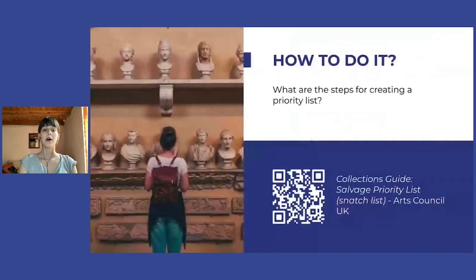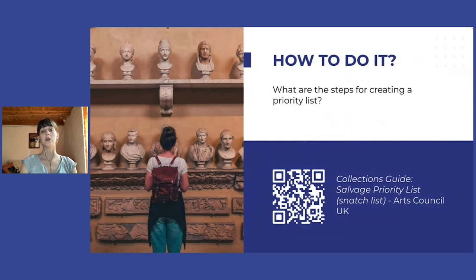How to do a priority list? Creating a priority list can be a very demanding and time-consuming activity for a cultural heritage institution. It requires carrying out a reconnaissance of the entire collection in order to be able to evaluate, in case of emergency, which artworks must be absolutely saved and which ones could be more vulnerable to a particular threat.